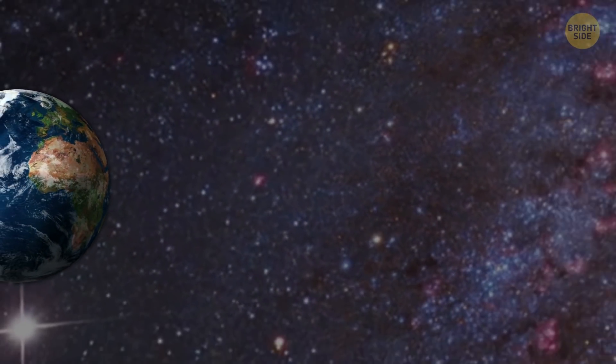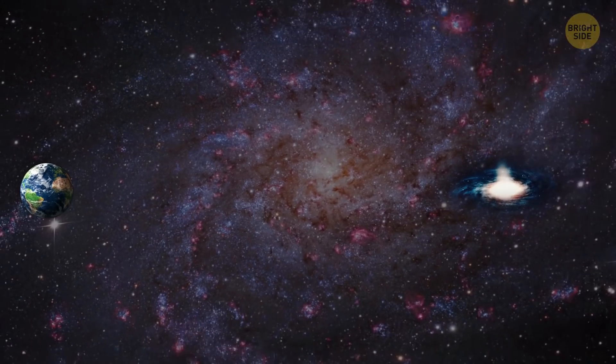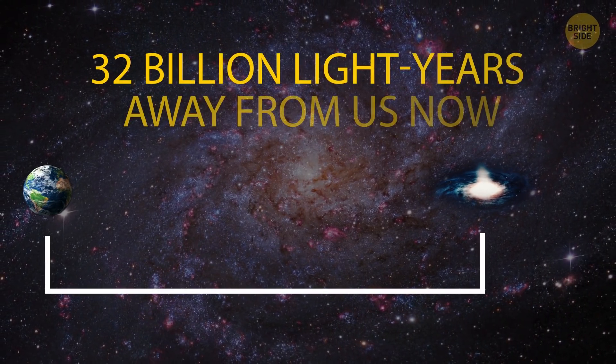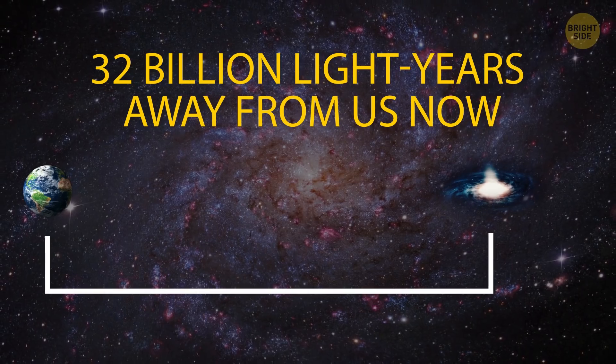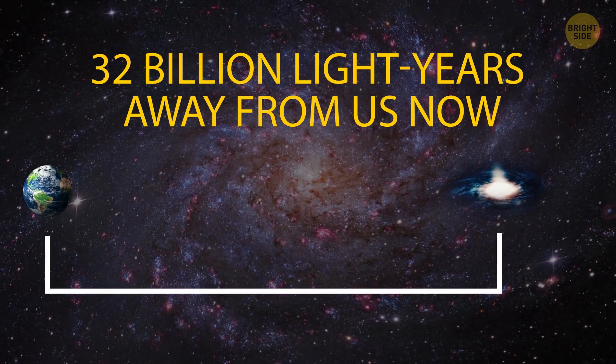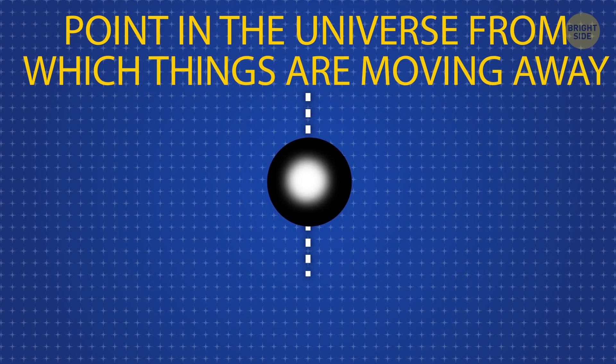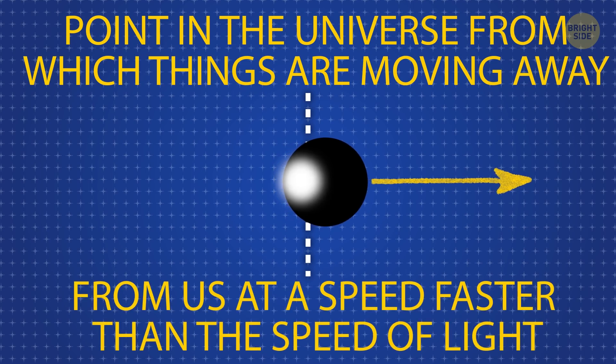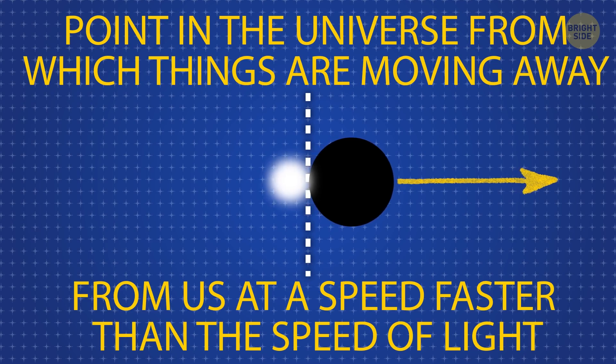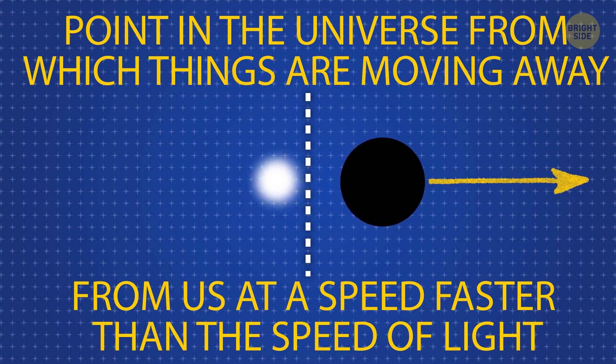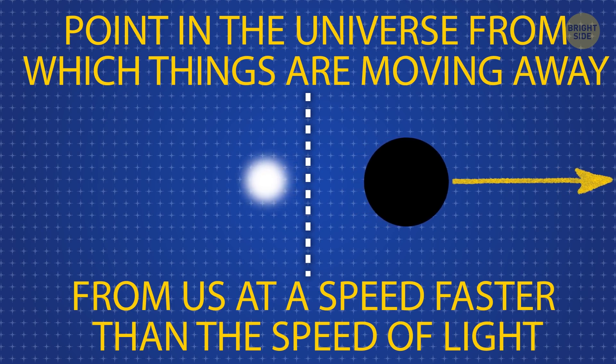So according to some complex calculations, the most distant galaxy is about 32 billion light-years away from us now and is still moving away from us, picking up speed as it goes. The expanding universe theory also means that there's a point in the universe from which things are moving away from us at a speed faster than the speed of light, a point beyond which, given our current scientific knowledge and technology, we can't investigate. This is a place from where light can never reach us.